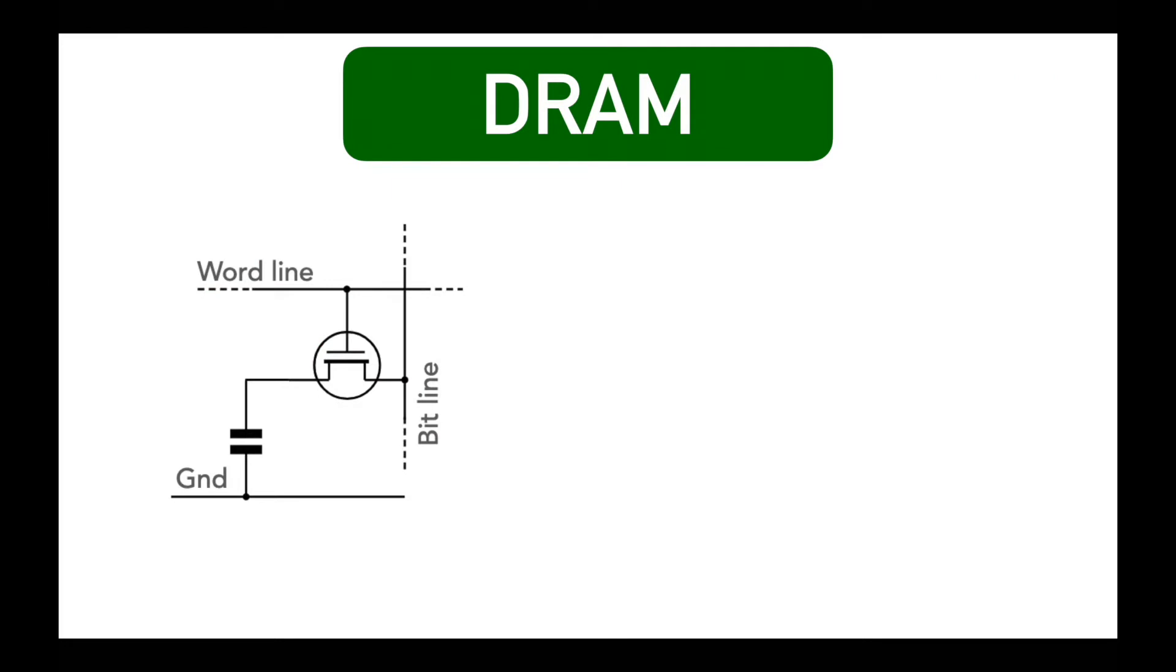Dynamic random access memory uses memory cell to store each bit, and each cell is made up of a tiny capacitor and a transistor. This capacitor can either be charged or discharged to hold logic 1 and 0 respectively.